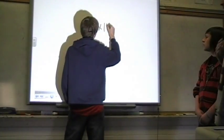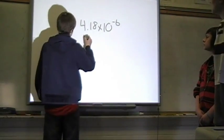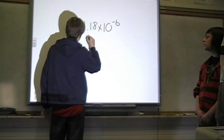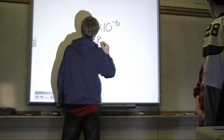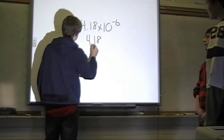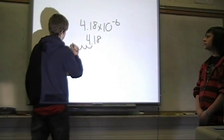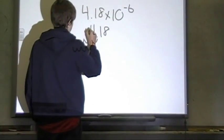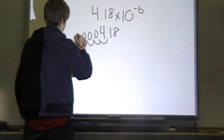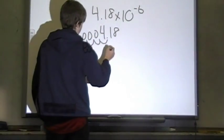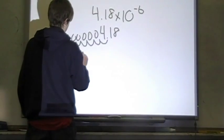4.18 times 10 to the negative 6. We write the problem. Alright, and since this is negative, you move over 6 spaces, add your zeros and rewrite your problem as your new answer.